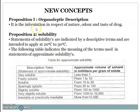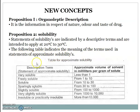Now let's start with concept propositions. First, organoleptic description — information with respect to nature, odor and taste of the drug. Proposition 2 — solubility: statements of solubilities are indicated by descriptive terms and are intended to apply at 20°C to 30°C. The following table indicates the meaning of terms used in the statement of approximate solubility, that is the approximate volume of solvent in milliliters per gram of solute.